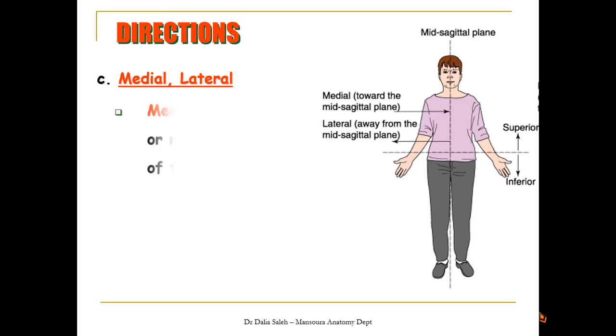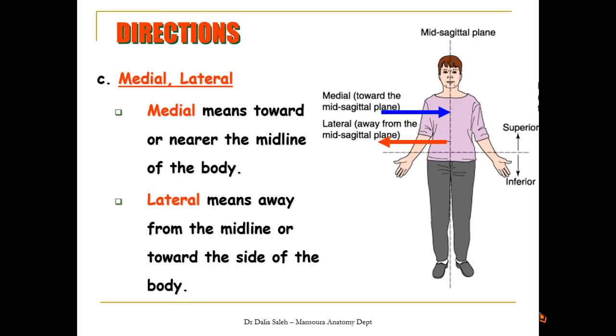Next, we have medial, and opposite to it is lateral. Medial means any point towards the midline of the body, while lateral means any point that lies away from the midline of the body. For example, if you want to describe the position of the fingers in relation to each other, so the thumb or the big finger is on the lateral side, while the little finger is on the medial side. What about the middle finger? The middle finger lies medial to the thumb, but in the same time, lateral to the little finger, and so on.